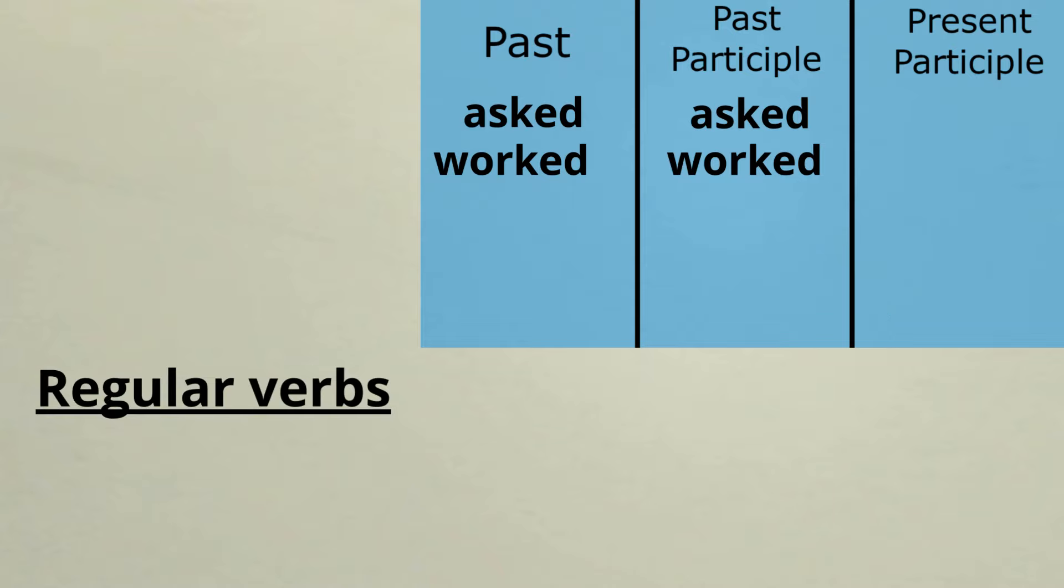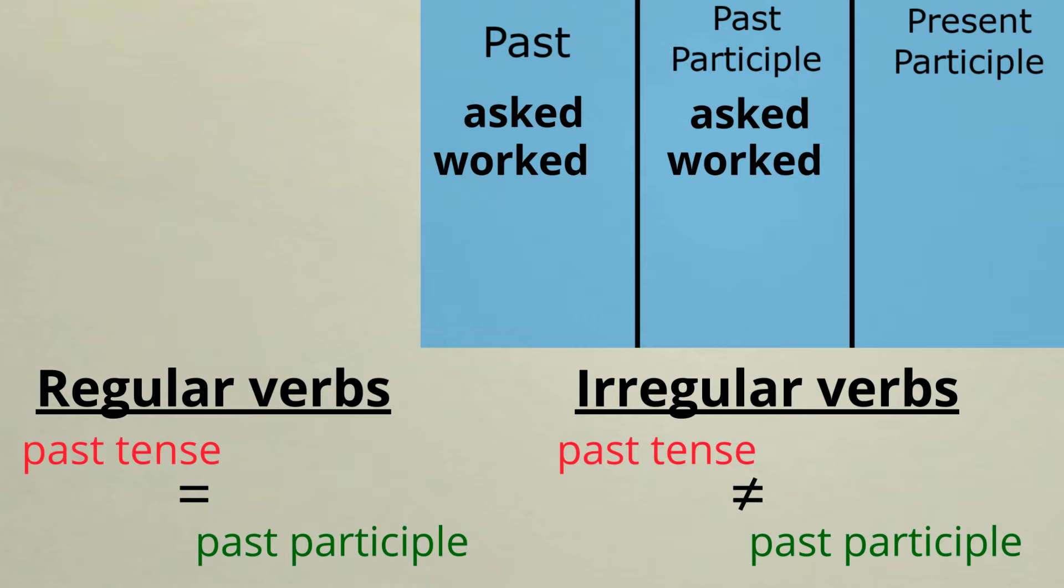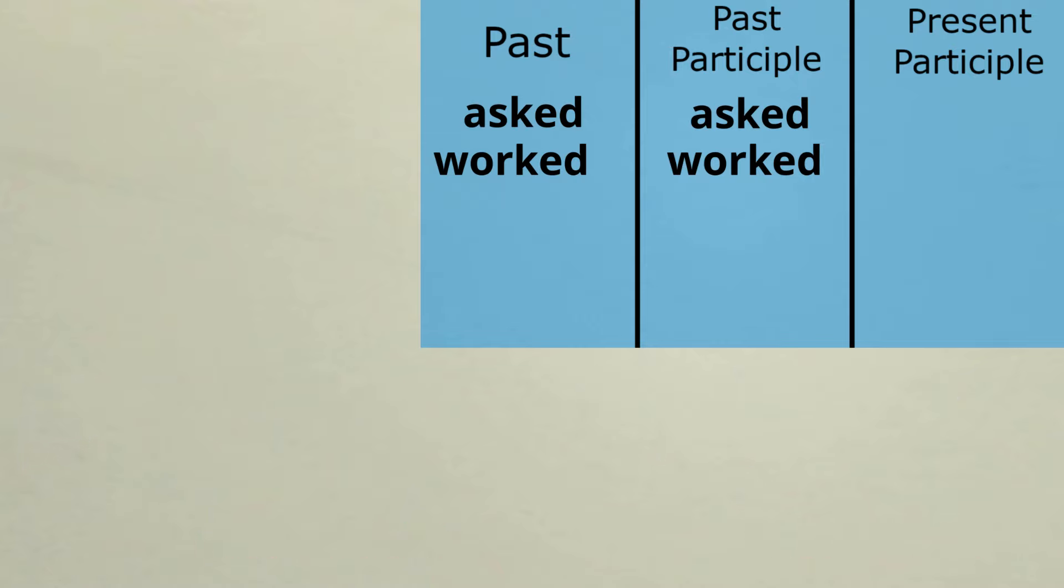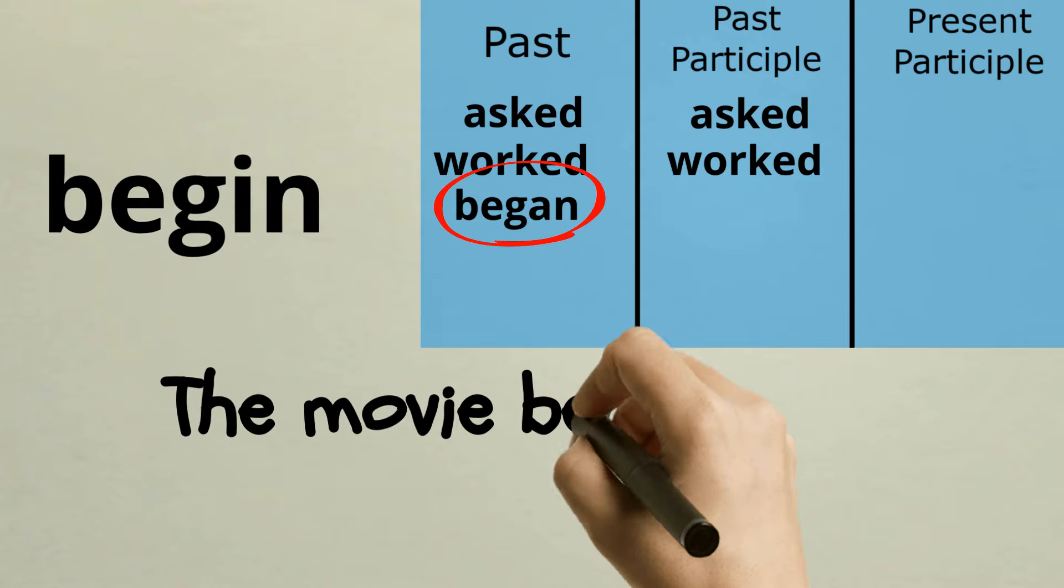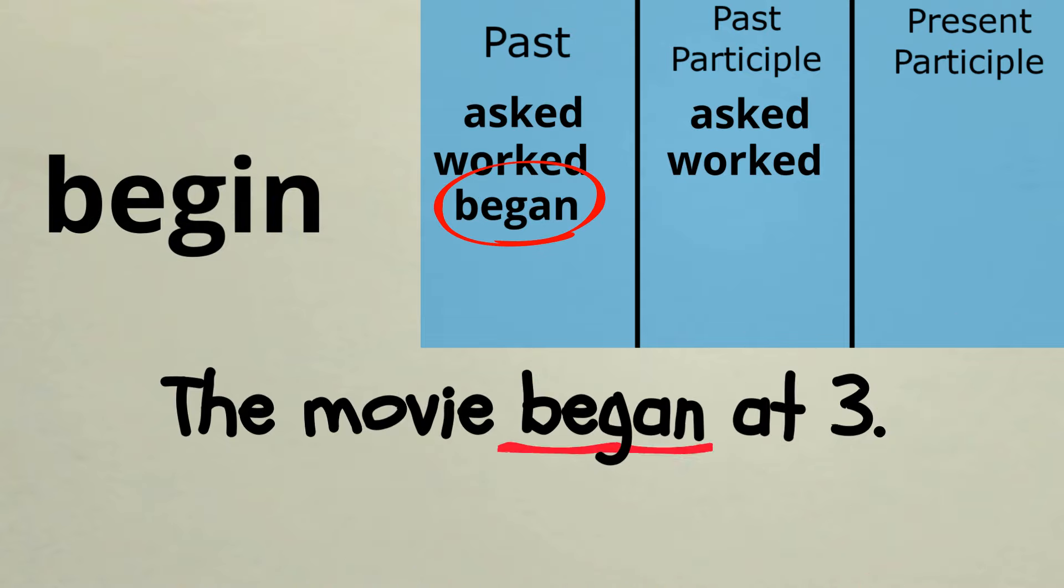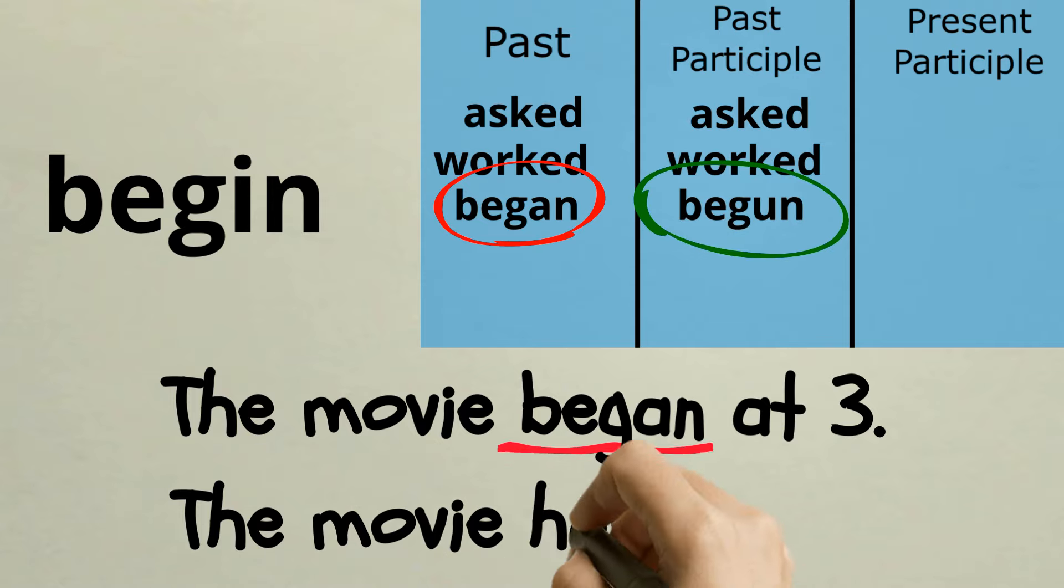With regular verbs, the past tense and the past participle are the same. But that's not the case with irregular verbs. Let's have a look at some. The past tense of the verb begin is began. The movie began at three. The past participle of begin is begun. The movie has begun.